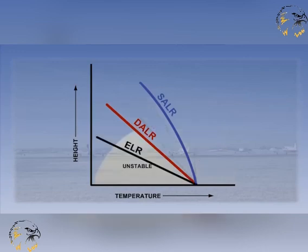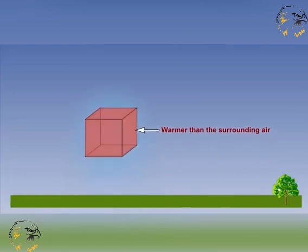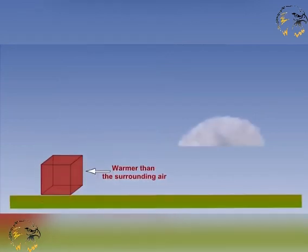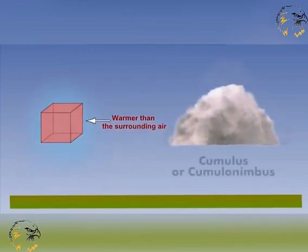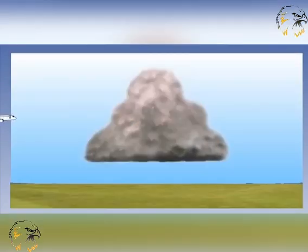First let's look at an unstable atmosphere situation. In this scenario, our parcel of air is warmer than its surroundings and can be described as buoyant. It will therefore naturally want to rise to a higher level, expanding and cooling as it does so. This situation is associated with convective type cloud — cumulus or cumulonimbus. This type of atmosphere is quite bumpy or turbulent, especially in the clouds themselves.